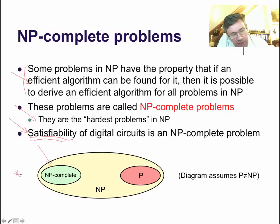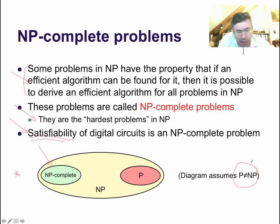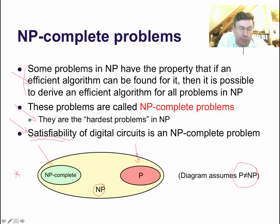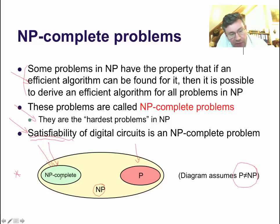In this diagram we can see the situation today. This assumes P is different from NP — what most people believe. In that case, within the class NP we have P, the polynomial time problems, which are in some sense easy; and we have NP-complete, which are in some sense the hardest problems in NP. Now, if P were equal to NP, then these three sets — NP-complete, P, and NP — would all be the same set.